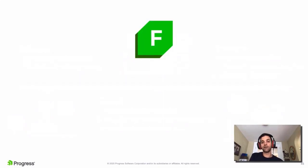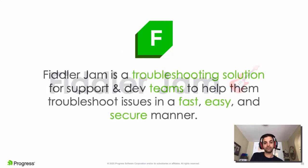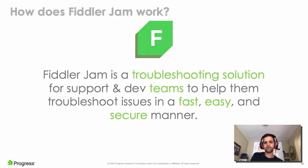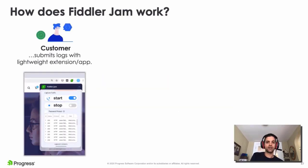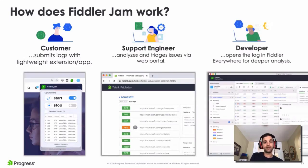I'm really excited to say that in the coming weeks you're going to have a chance to experience our way of solving this problem: a brand new product called Fiddler Jam. Fiddler Jam is a troubleshooting solution for support and development teams to help them troubleshoot issues in a fast, easy, and secure manner. Non-technical customers will be able to use a browser extension for Chrome to report issues securely via the cloud.